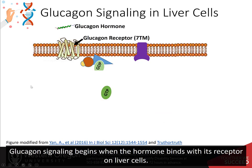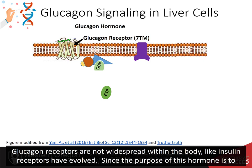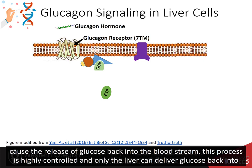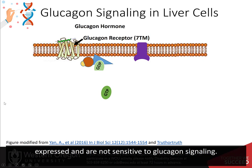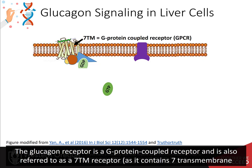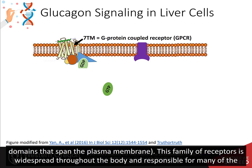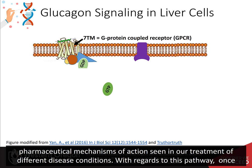Glucagon signaling begins when the hormone binds to its receptor on the liver cells. Glucagon receptors are not widespread within the body like insulin receptors. Since the purpose of this hormone is to cause the release of glucose back into the bloodstream, this process is highly controlled and only the liver can deliver glucose back into the bloodstream to maintain homeostasis. Thus, other target tissues such as skeletal muscle do not need to have these receptors expressed and are not sensitive to glucagon signaling. The glucagon receptor is a G-protein coupled receptor, also referred to as a 7TM receptor, as it contains seven transmembrane domains that span the plasma membrane.